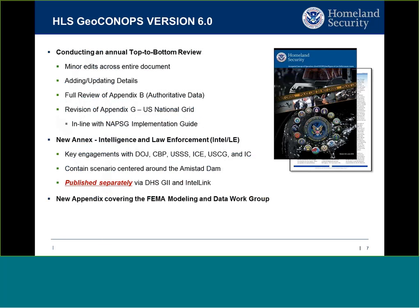Diving into version six: it's an annual top-to-bottom review with minor edits across the entire document. We're adding details on authoritative data sources, requirements, and capabilities that have been sunset or migrated. There's a full review of Appendix B — what geospatial data sources are available to the community and how do you get them — and a revision of Appendix G on the national grid, aligned with the NAPSIG implementation guide. We're also adding a new annex focused on intel and law enforcement, with key engagements with DOJ, CBP, Secret Service, ICE, Coast Guard, and the intelligence community as defined by Executive Order 12333.